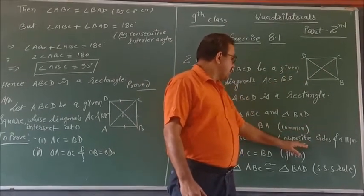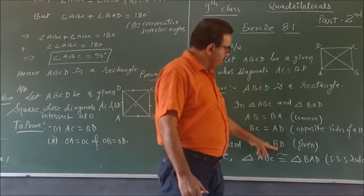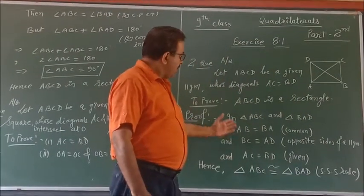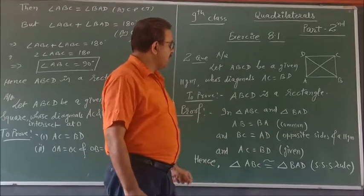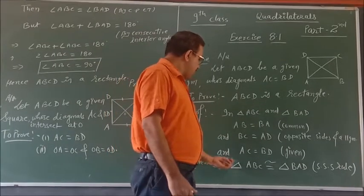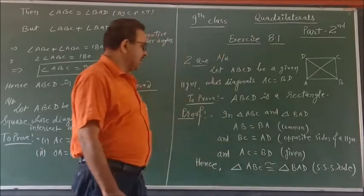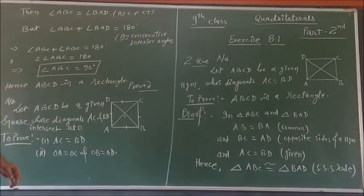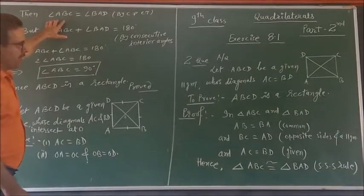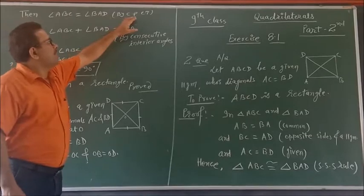And BC is equal to AD with the properties of parallelogram, opposite sides of the triangle. And third, we are also given AC is equal to BD. So all the first three sides are equal to the corresponding sides of the other triangle. With the help of congruence rule, we get triangle ABC congruent triangle BAD by SSS rule. And after congruence, we get angle ABC is equal to angle BAD by CPCT.